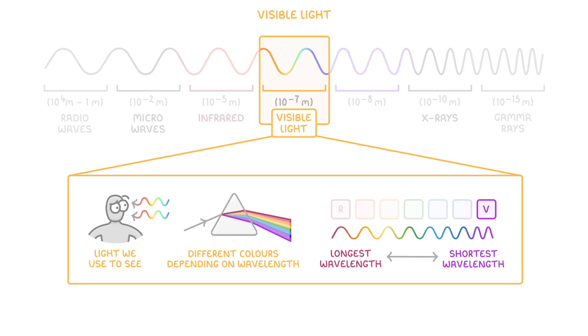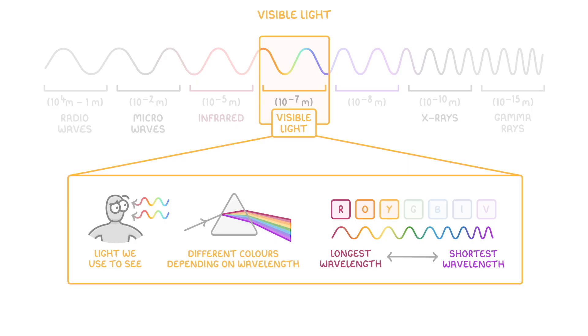You can remember the order of the colors using the phrase ROYGBIV which stands for red, orange, yellow, green, blue, indigo and violet.